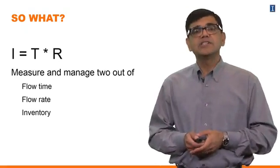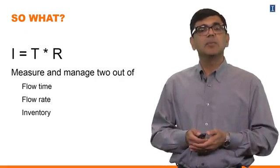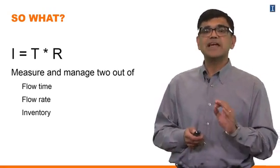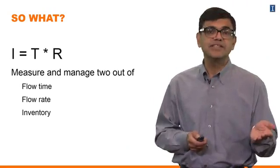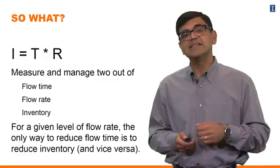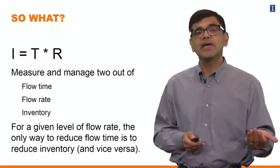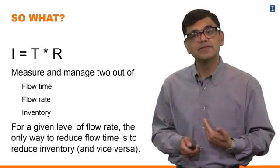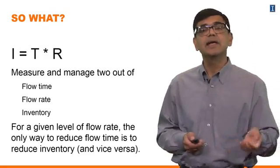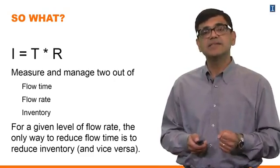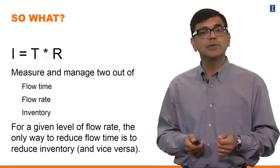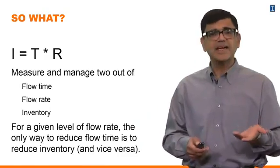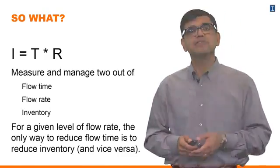So we know I equals T times R. How is it practically useful? If you can only calculate two of these aspects, the third one becomes easily determined. If you know the flow rate — the rate at which you are selling stuff to customers — and you know how much time it spends in the system, that's your flow time, then you know on average how much inventory is in the system.